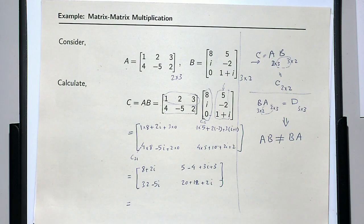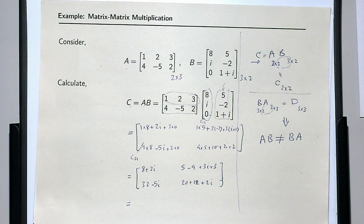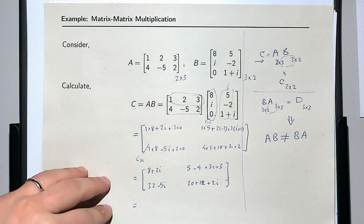Any questions about the matrix-matrix operation? I will scan these notes and upload them to Blackboard. Now we move on to the implementation in MATLAB. In MATLAB you can simply write A * B and that performs matrix-matrix multiplication. But be careful that the dimensions of A and B follow the convention — the inner dimensions must be the same.